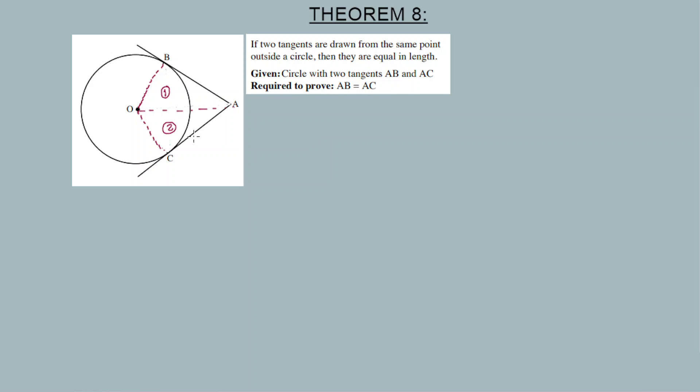Now, as we saw from theorem seven, a radius is always perpendicular to a tangent. So these angles will be useful. When we have two triangles and we want to prove a theorem, we use congruency. We need to prove that the triangles are congruent.